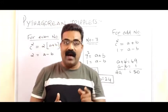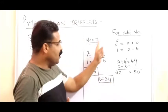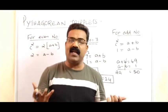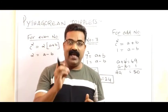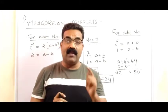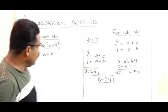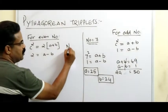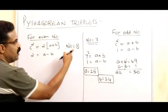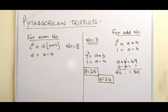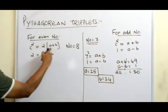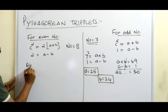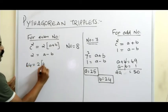That is the method for when the given number is odd. Now suppose the given number is an even number — for example, 8. For an even number, we use the formula: c² = 2(a + b) and 2 = a − b. So eight squared is 64, giving us 64 = 2(a + b).